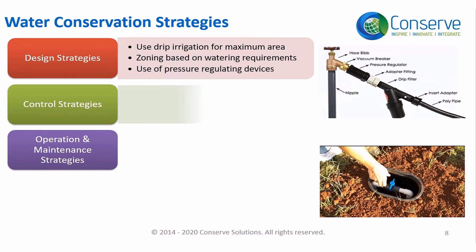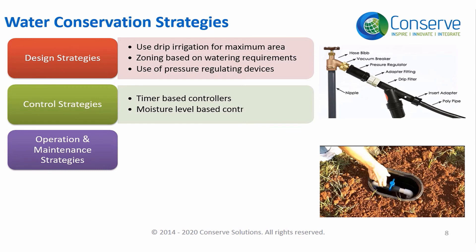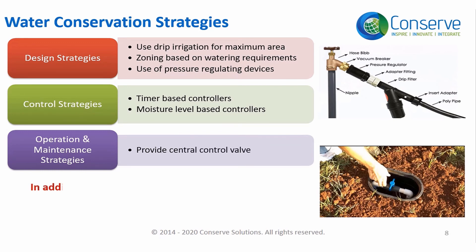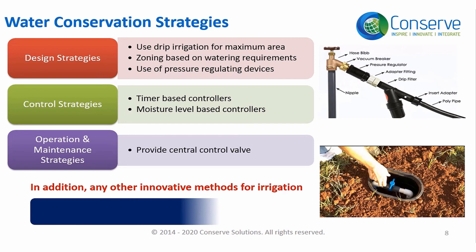Control strategies include using timer-based controllers and irrigation systems based on moisture level in the soil. For operation and maintenance purposes, a central control valve must be provided. In addition to the above strategies, any innovative methods to reduce water consumption for irrigation are accepted.